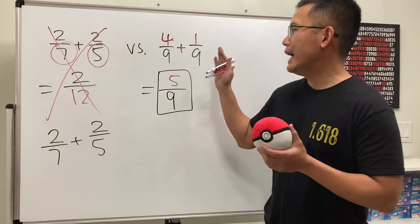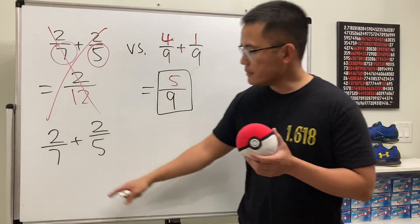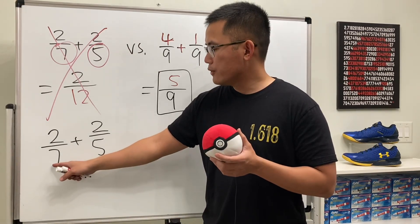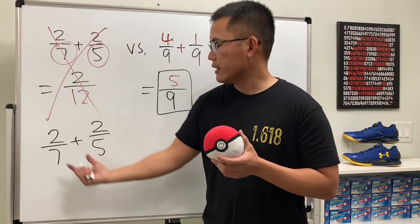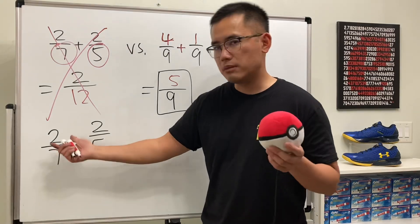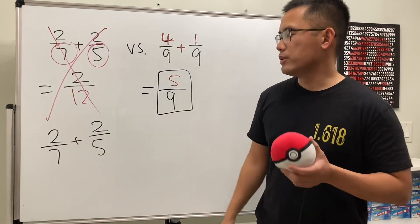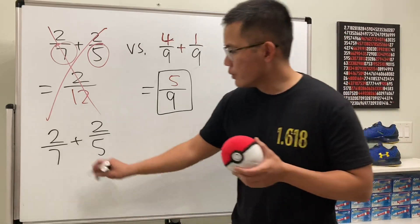So now let's actually talk about how we can do this. Whenever we are adding fractions, the key is that we will have to get the same denominator. Look at the 7 and also look at the 5. Try to factor it, but we cannot, right? This is just 7 times 1, but we don't reduce it. Likewise, this is just 5 times 1. You cannot reduce it.